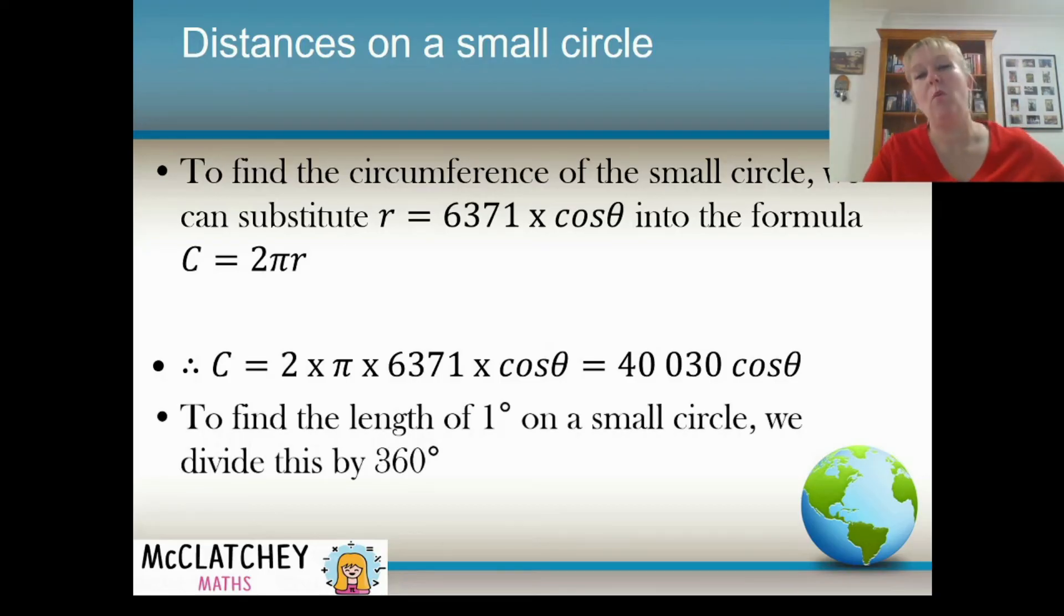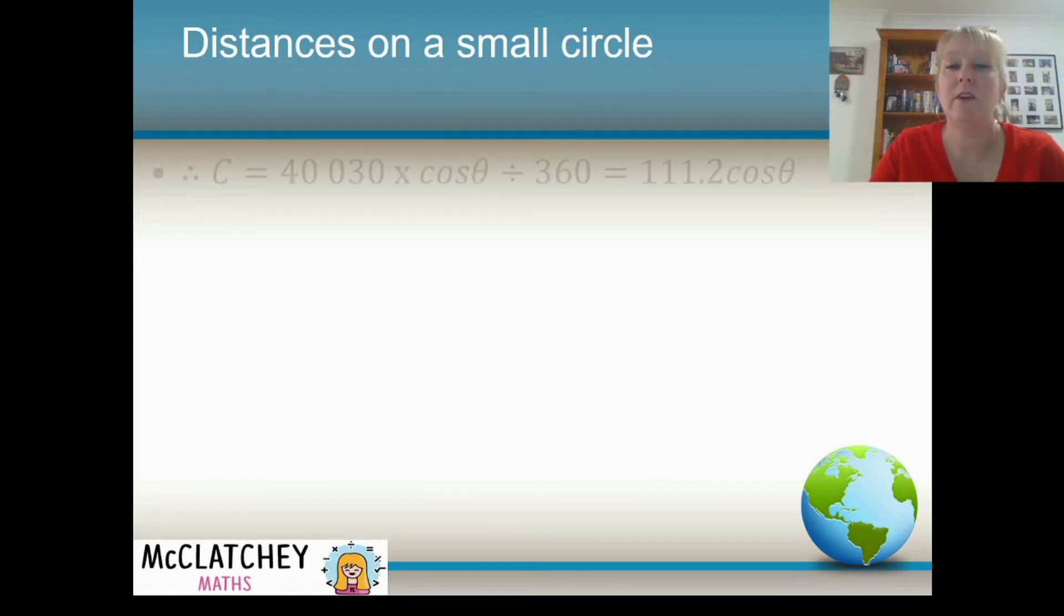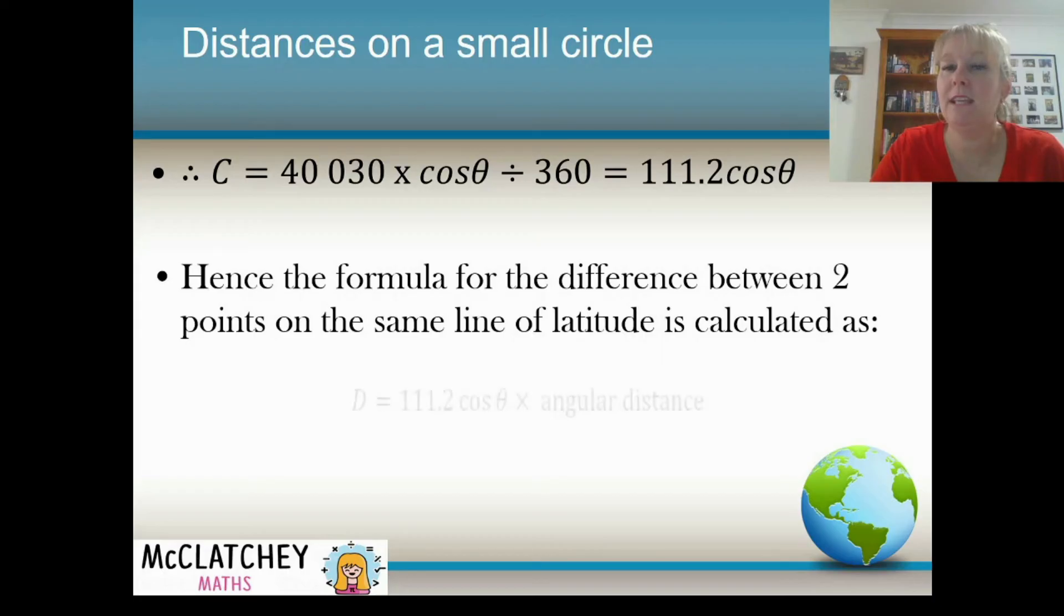Now, if I wanted to find one degree, the distance of one degree on that small circle, I know its circumference. So I've got to divide that circumference by 360 degrees. So if I did that, I would end up with 111.2 cosine theta. Now you might be thinking to yourself, I've seen that somewhere before. Yes, you have. You've seen that on your formula sheet.